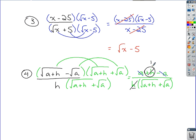When you do that, one is left here, one is left there. So your simplified answer after you rationalize this numerator is 1 over the square root of a plus h plus the square root of a.